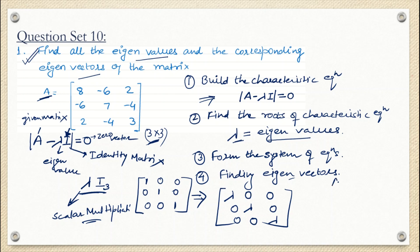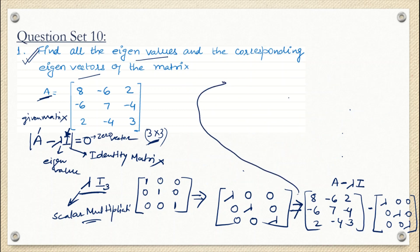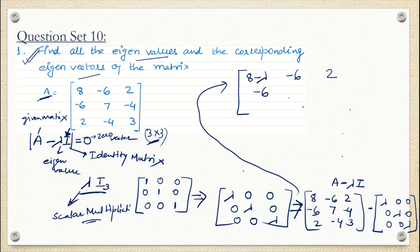Now subtract A and λI. A is: [8, -6, 2 / -6, 7, -4 / 2, -4, 3]. Subtracting λI, only the diagonal places change. So A minus λI gives: [8-λ, -6, 2 / -6, 7-λ, -4 / 2, -4, 3-λ]. All off-diagonal values remain the same.